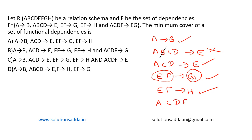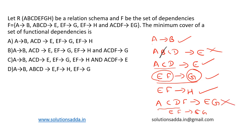The last dependency is ACDF determines EG. From the existing dependencies, ACD determines E, so ACD can be replaced with E, giving EF determines EG. But EF determines G is already present, and E determines E is trivially known, so this entire dependency is also not required.